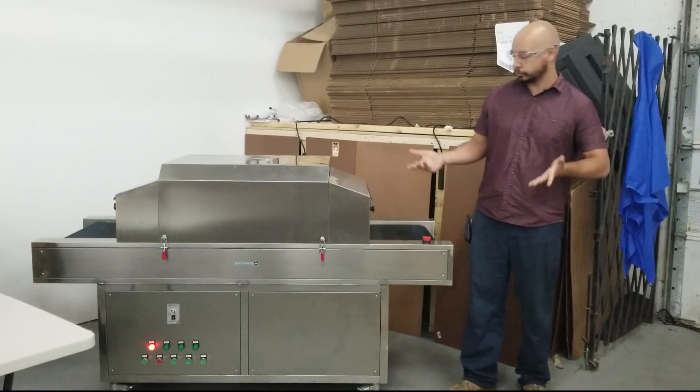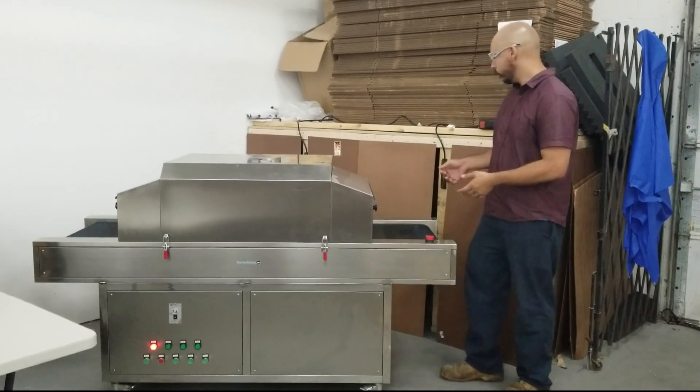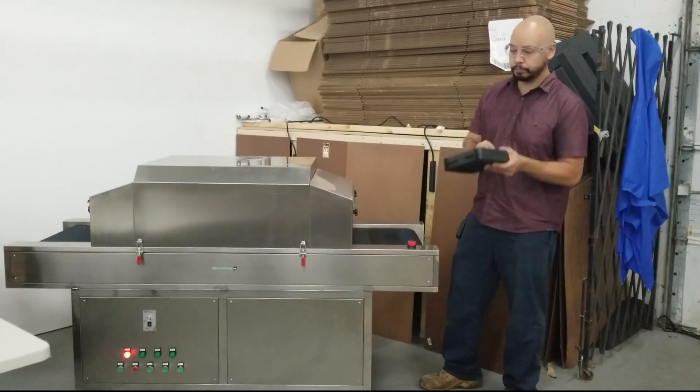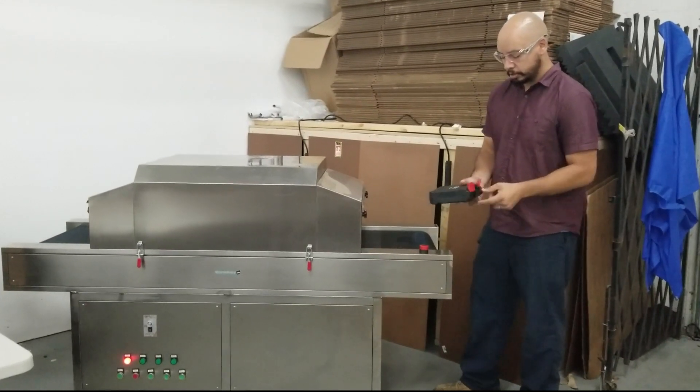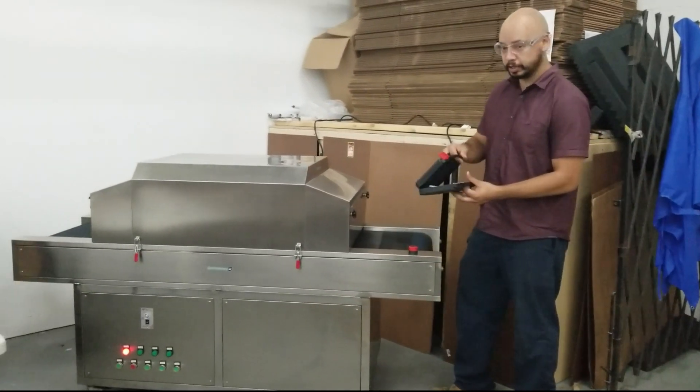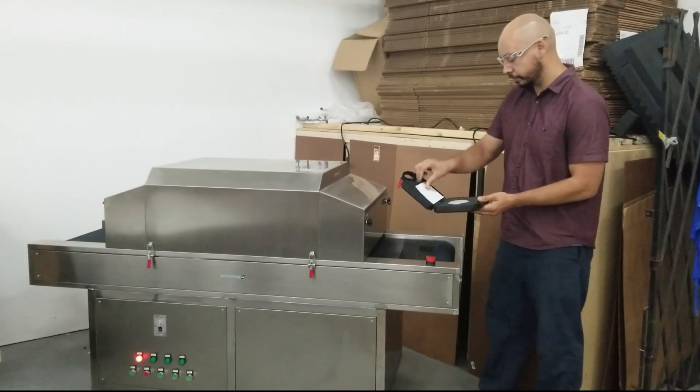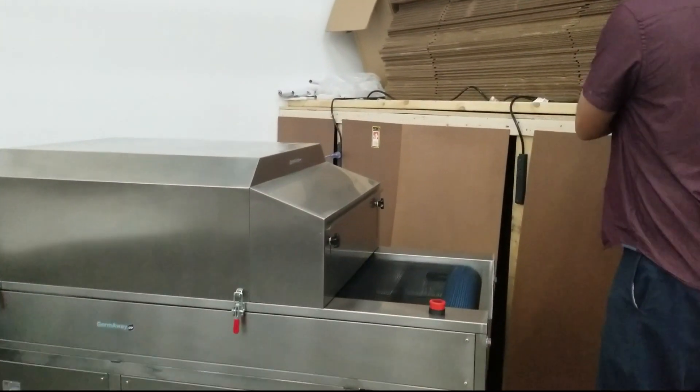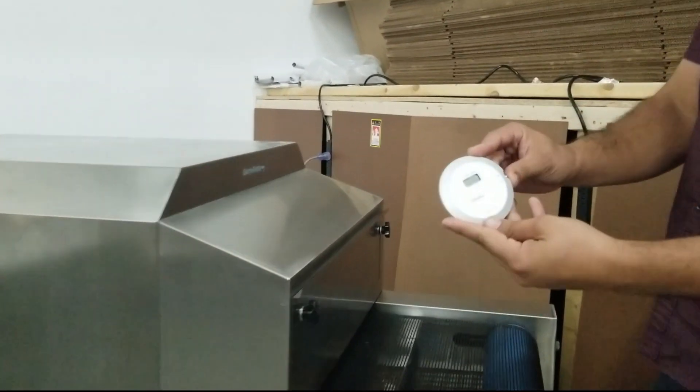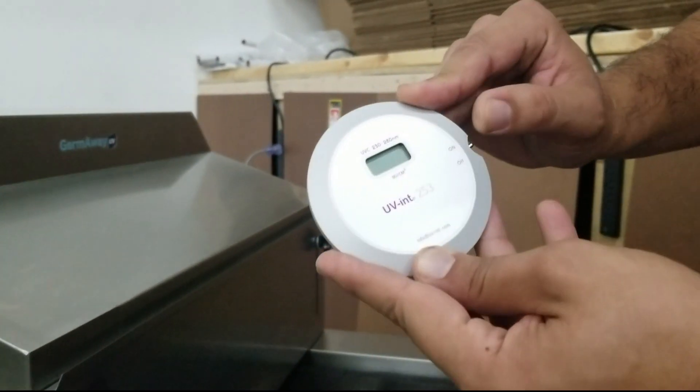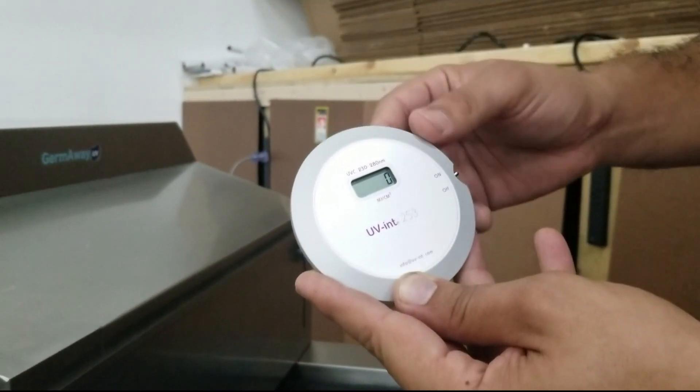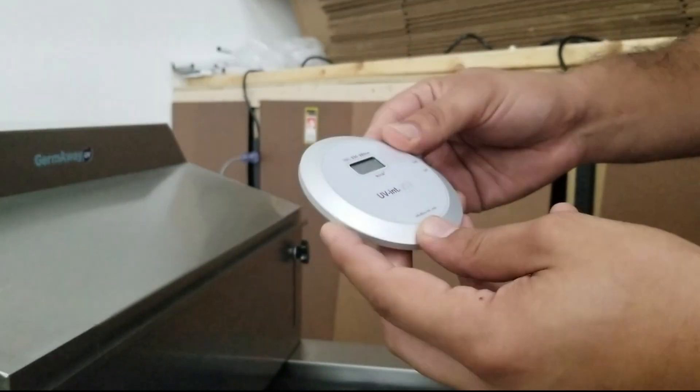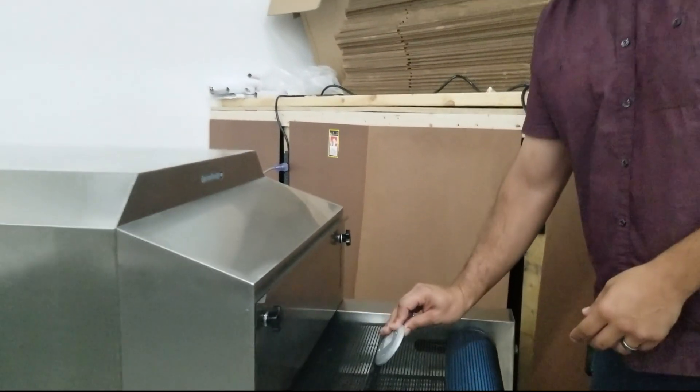And it's super easy to use, so I'm just going to show you a little demonstration. Pretend you need to sanitize something, whether it be groceries or anything that you want to hit with 253.7 nanometer UV-C. I'm going to use our UV International UV-C measuring puck because that way we can see how much of a dose it actually does. So I'll put this here.